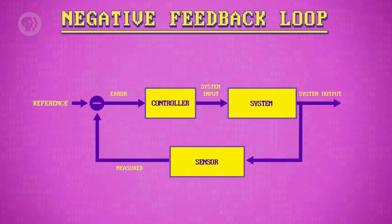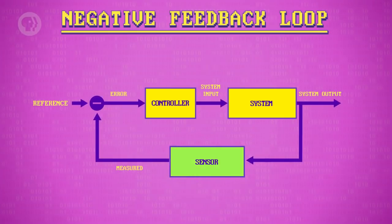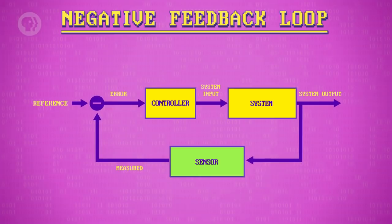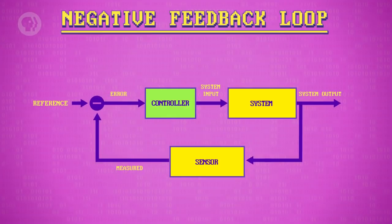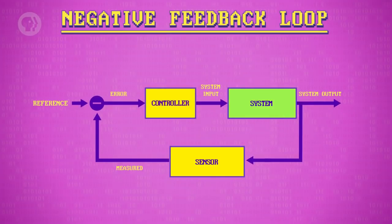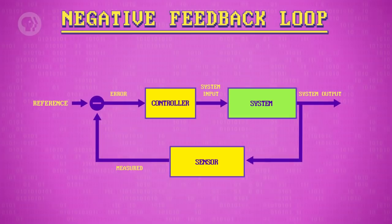A negative feedback control loop has three key pieces. There's a sensor that measures things in the real world, like water pressure, motor position, air temperature, or whatever you're trying to control. From this measurement, we calculate how far we are from where we want to be – the error. The error is then interpreted by a controller, which decides how to instruct the system to minimize that error. Then, the system acts on the world through pumps, motors, heating elements, and other physical actuators.